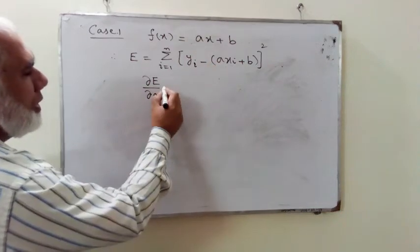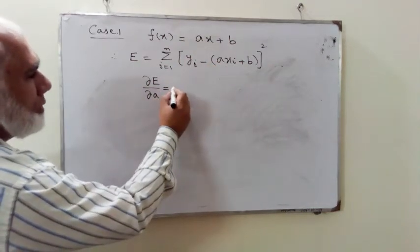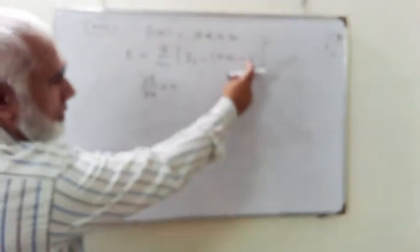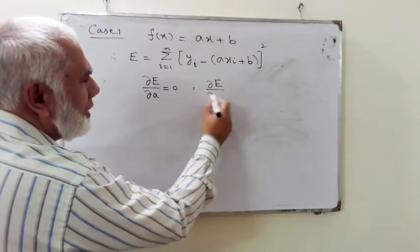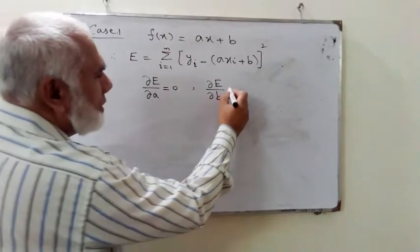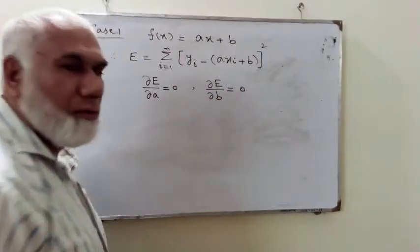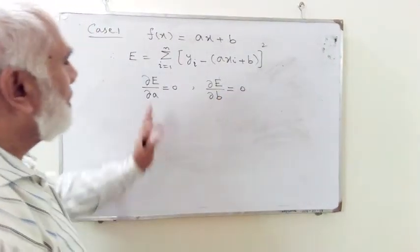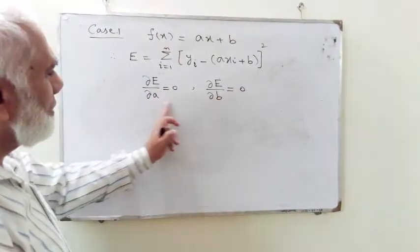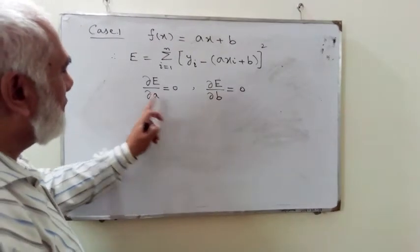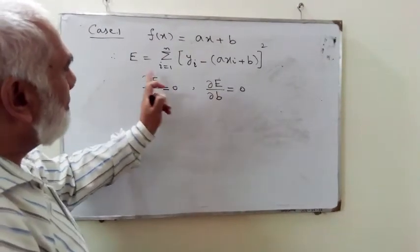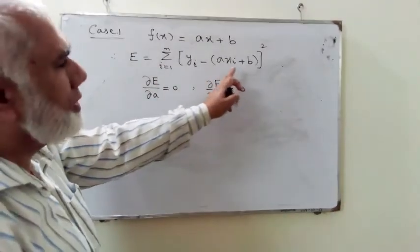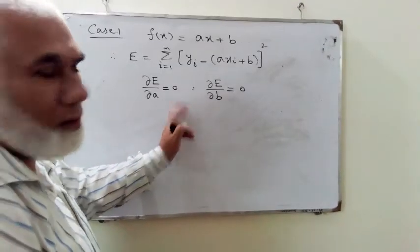There are two constants involved in the equation. We set the partial derivative of E with respect to a equal to 0, and similarly, the partial derivative of E with respect to b also equal to 0. For the first equation, partial E over partial a equals 0, we differentiate the equation and set the result equal to 0.